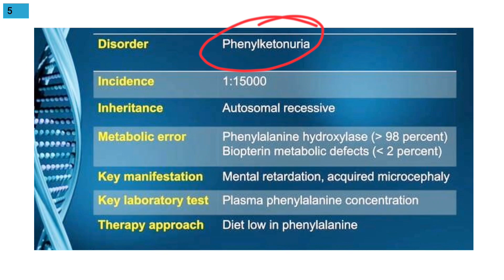The incidence ratio of phenylketonuria is low — about 1 in 15,000 infants can be affected. It is autosomal recessive. The metabolic error involves the enzyme phenylalanine hydroxylase, which is necessary for phenylalanine metabolism.